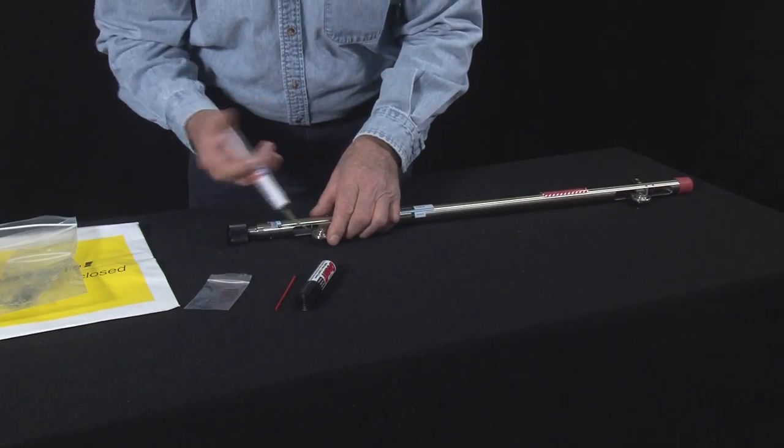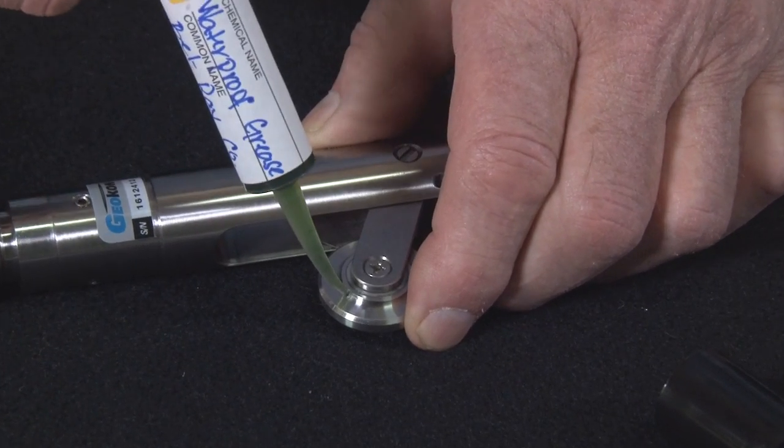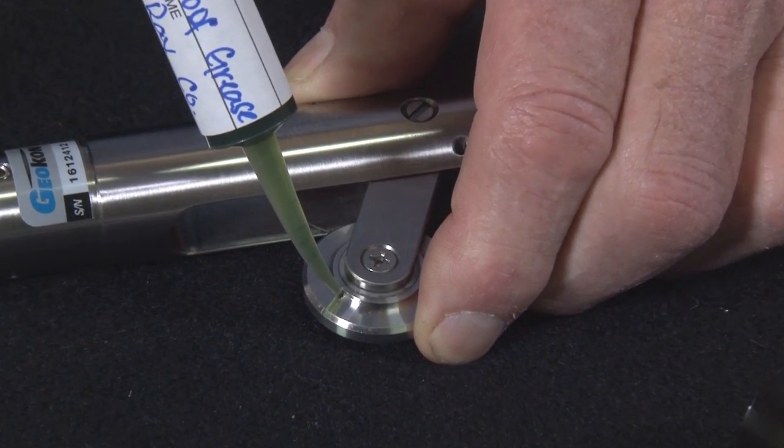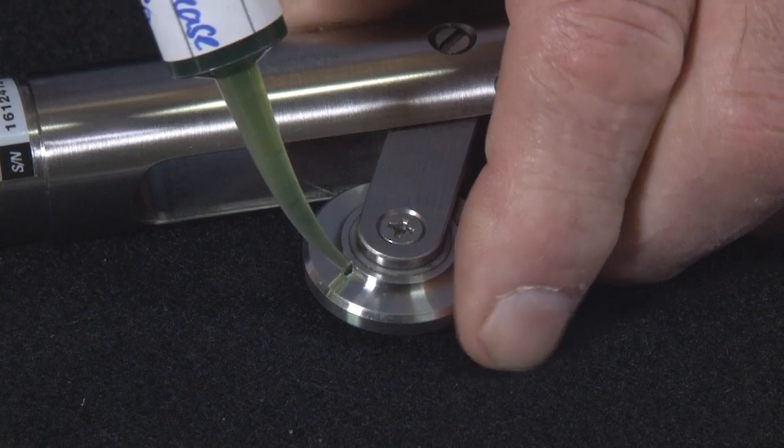Next, locate the grease injection holes on each wheel assembly. Apply grease until it oozes from the packing. Repeat with all wheels.